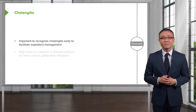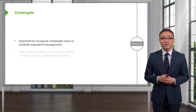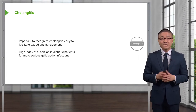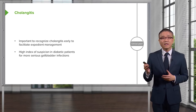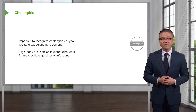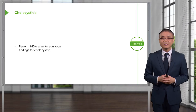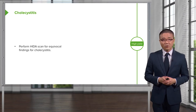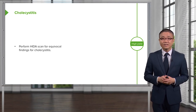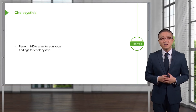Some important clinical points to remember: it is very important to recognize cholangitis early to facilitate expedient management, which usually requires drainage of the biliary system. You must have a high index of suspicion in diabetic patients for a more serious gallbladder infection. Diabetic patients or patients on steroids are more likely to present with gangrenous cholecystitis if not on antibiotics or have surgery in a timely fashion. For your examination, remember: if the physical examination or the ultrasound shows equivocal findings for cholecystitis, your next step in management should be to obtain a HIDA scan to confirm. With the HIDA scan, you're looking for a cystic duct obstruction or non-filling of the gallbladder.